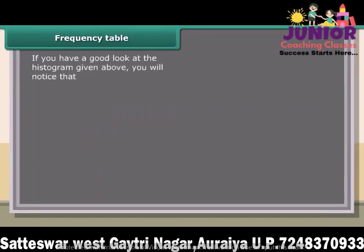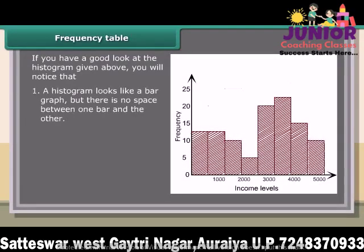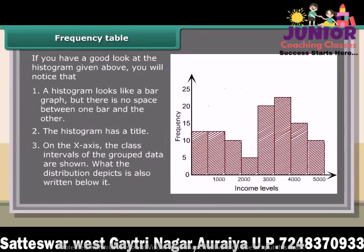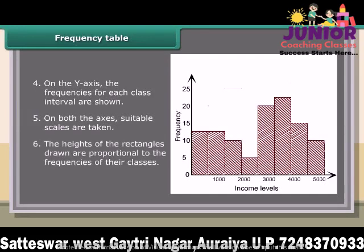If you have a good look at the histogram given above, you will notice that: a histogram looks like a bar graph, but there is no space between one bar and the other; the histogram has a title; on the x-axis, the class intervals of the grouped data are shown, and what the distribution depicts is written below it; on the y-axis, the frequencies for each class interval are shown; on both axes, suitable scales are taken; and the heights of the rectangles drawn are proportional to the frequencies of their classes.